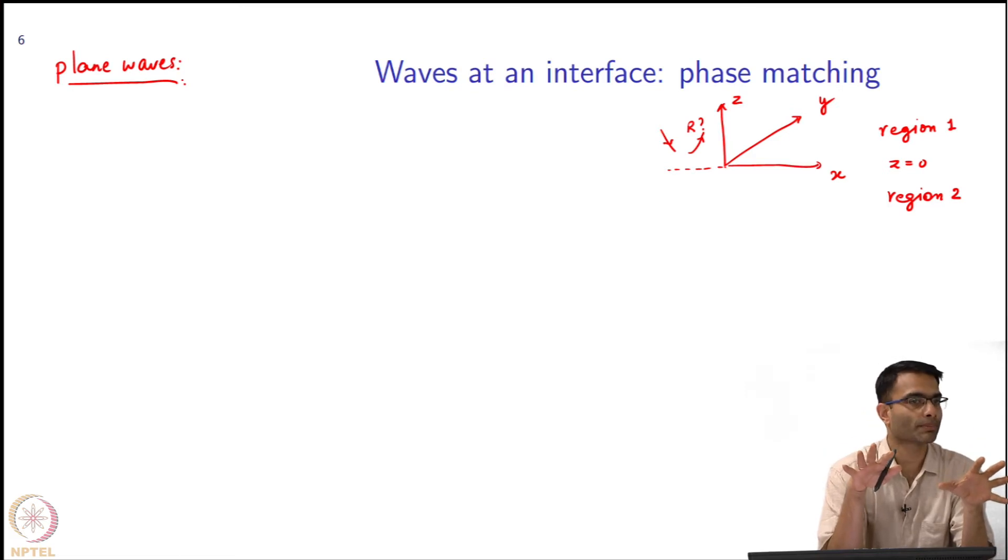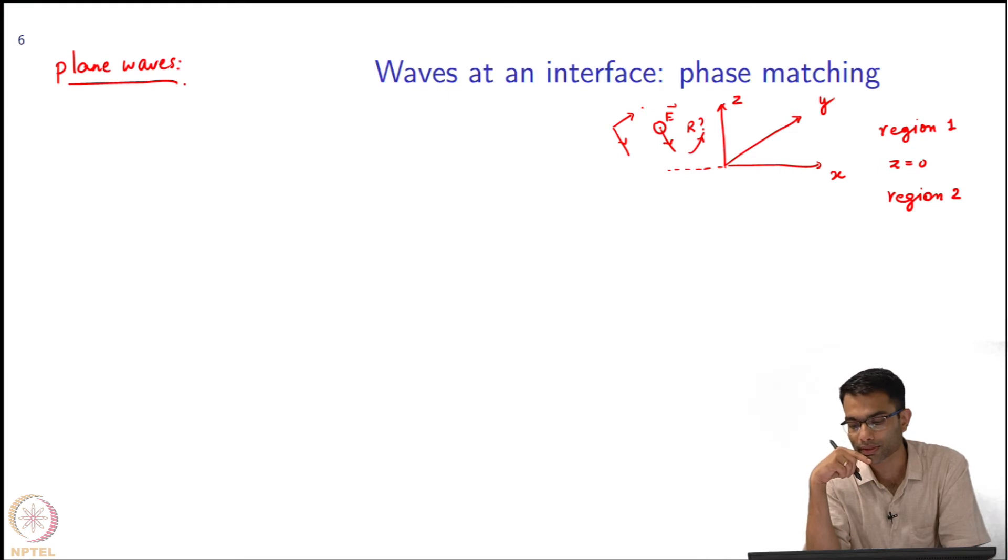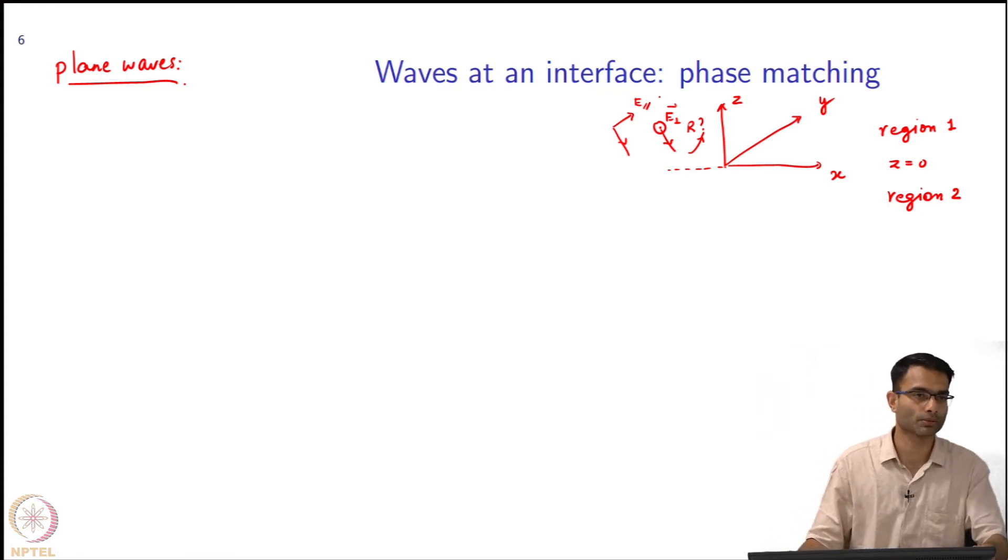I know that any arbitrary plane wave can be broken up into two orthogonal polarizations, but how I choose those is up to me. One convention is parallel and perpendicular, but that is not the only way. Another way could be TE and TM - those are also two orthogonal polarizations. The difference is whether there is a nonzero Ez or not. That is the definition of TM and TE. It makes life simple, so we will use TE and TM notation.